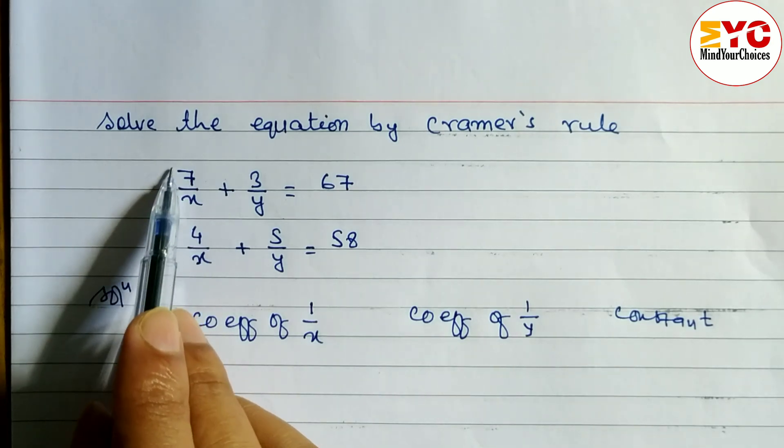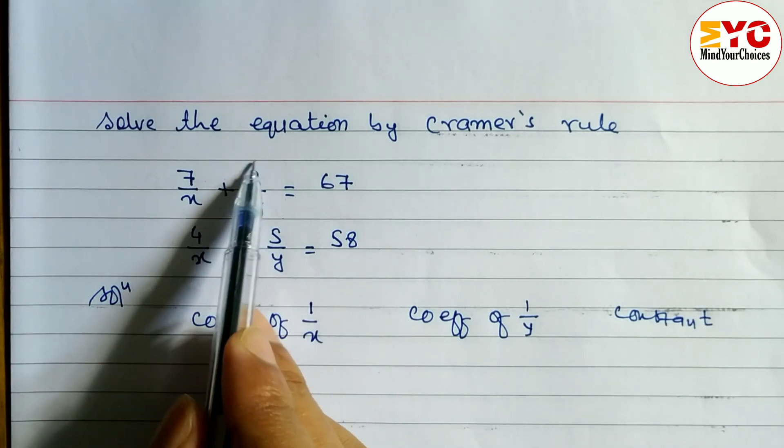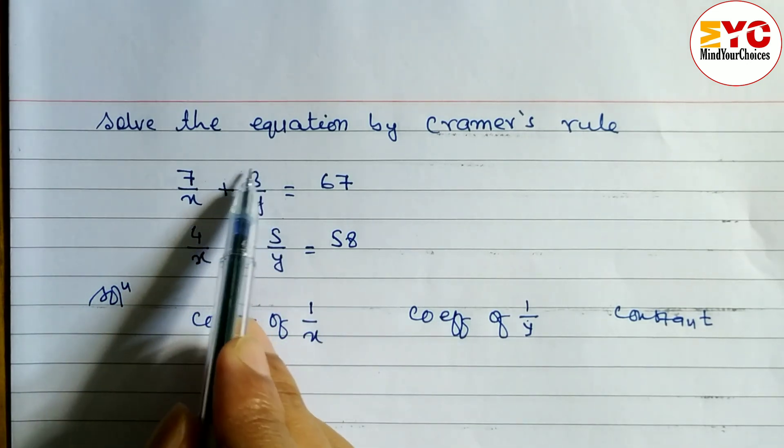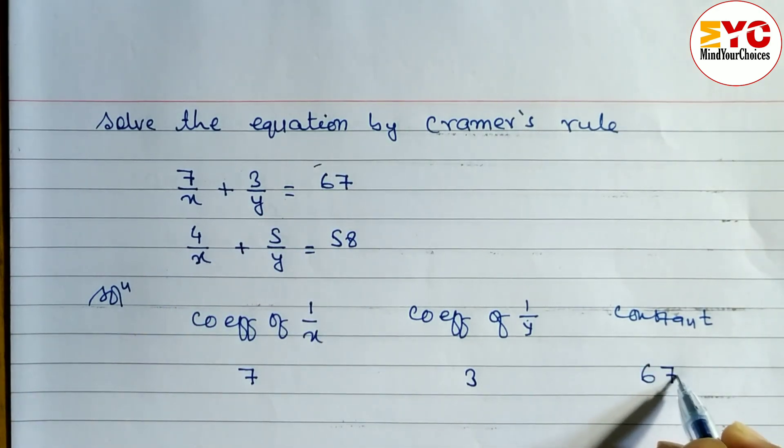Now, what is the coefficient of 1 by x? Here 7, so 7 we have to take only number. Here coefficient of 1 by y, numerical coefficient of 1 by y means number we have to look at. 3, so we have to write 3 and we have to take with sign. If negative, we have to write negative. If positive, then doesn't matter.